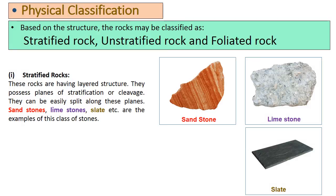Now let's discuss stratified rocks, which is the physical classification of rock. These rocks have a layered structure. They possess planes of stratification or cleavage and can be easily split along these planes. Sandstones, limestones, slate, etc. are examples of this class of stones.